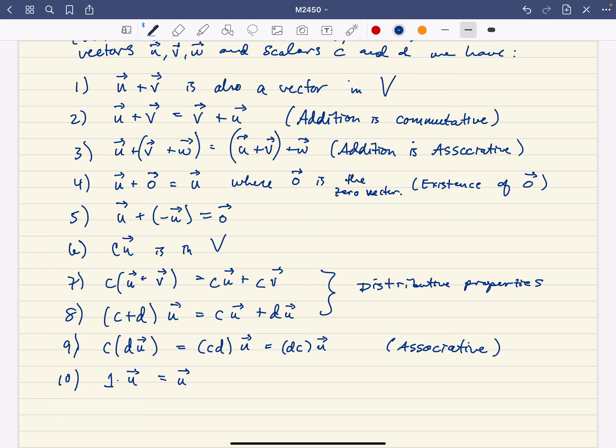If you scale any vector, you get another vector in the vector space. There's distributive properties, so 8 and 9 are still distributive properties. There's still the scalar multiplication associative property, and if you take the real number 1 and multiply by a vector, you get the original vector back. So, any set V with these 10 properties is called a vector space.